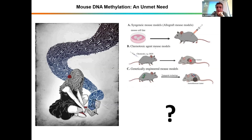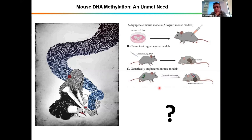Whole-genome bisulfite sequencing is very expensive, requires a lot of bioinformatic power and expertise. The same applies to all researchers with genetically engineered mouse models — they have knockout mice, they have tumors, but they have problems studying the epigenome in these samples because whole-genome bisulfite sequencing is very expensive and requires a lot of biocomputational power.